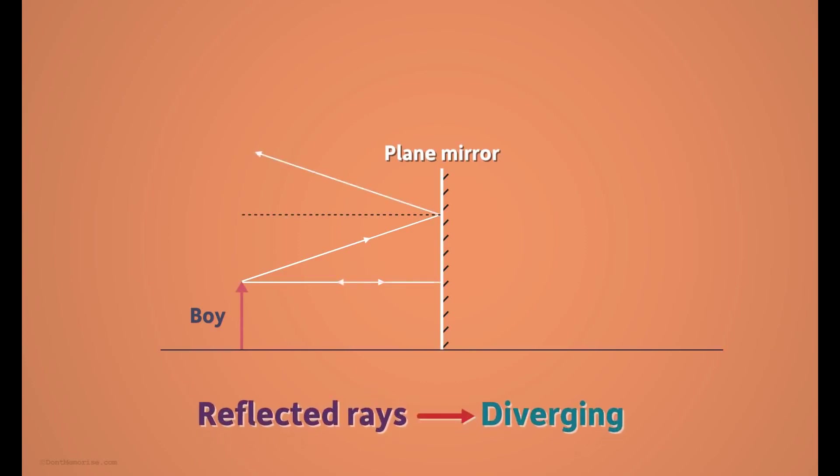That is, they are diverging. But we know that the image is formed somewhere behind the mirror. So let me extend these reflected rays backwards and see what happens. We see that they meet at this point behind the mirror.